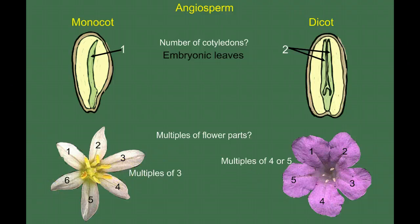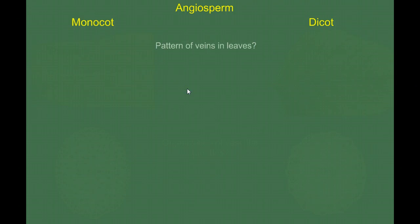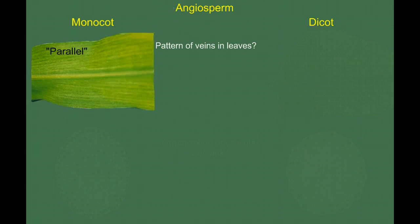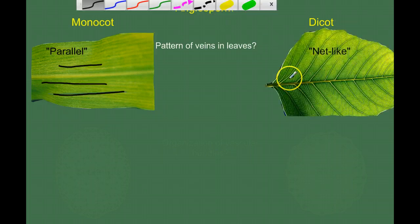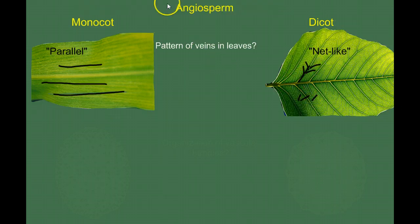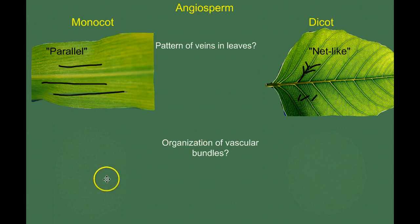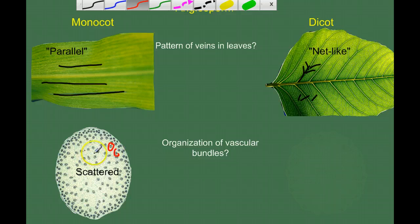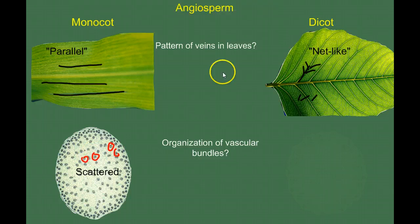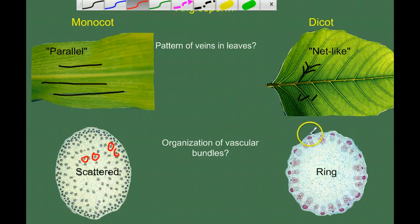Another way to tell monocots from dicots is to look at the pattern of veins in the leaves. In a monocot leaf, the veins run parallel. In a dicot leaf, the venation is net-like — the veins intersect, creating branches that look like a net thrown over the leaf. We can also cut the stem and look at the organization of the vascular bundles — the xylem and phloem. In the monocot, the vascular bundles are scattered throughout the stem. But in the dicot stem, the vascular bundles are arranged in a neat ring around the outside.